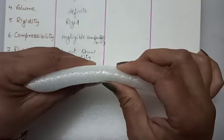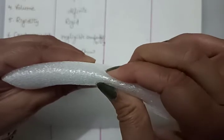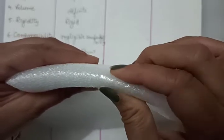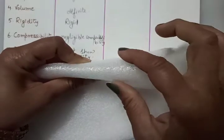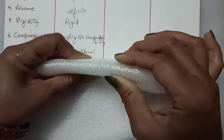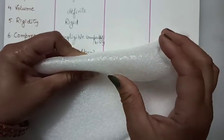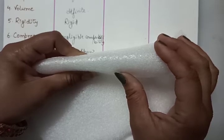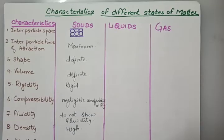What about a sponge? It is a solid, yet we are able to compress it. Why? Because in a sponge there are minute holes in which air is trapped. When we press it, the air is expelled out and we are able to compress it. When we remove the force, it is again filled with air. That's why it is also regarded as a solid, and that's why we are able to compress sponges.